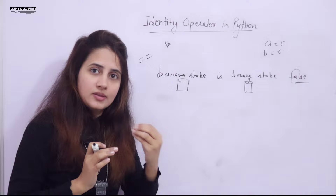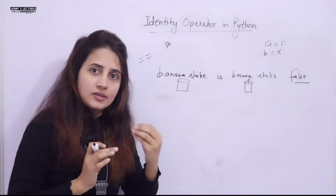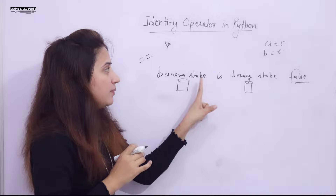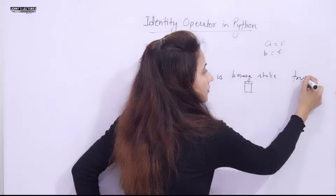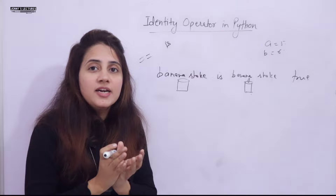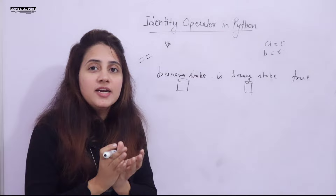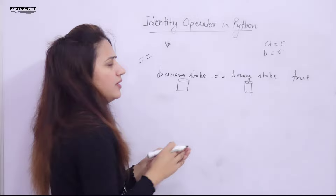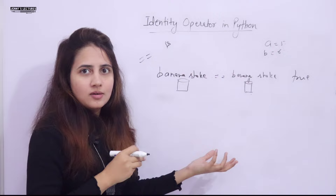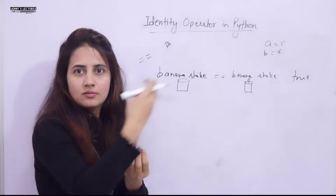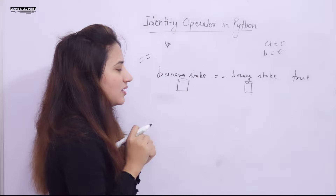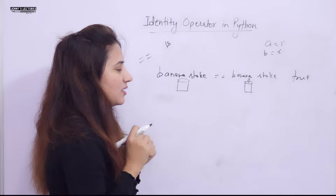However, if you and your friend are sharing the same single glass of banana shake, then `banana_shake is banana_shake` returns True because the object is the same — same memory address, same glass. And obviously `==` would also return True. If you add a cherry to that shared glass, your friend's glass also has cherry, because it's the same glass.